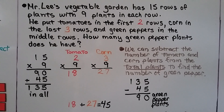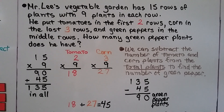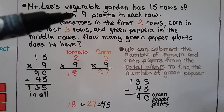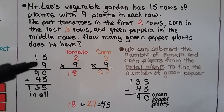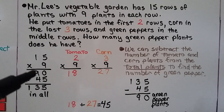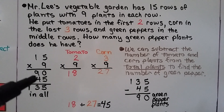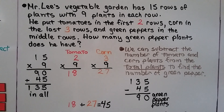Mr. Lee's vegetable garden has fifteen rows of plants with nine plants in each row. He put tomatoes in the first two rows, corn in the last three rows, and green peppers in the middle rows. How many green pepper plants does he have? First we figure out how many plants there are in all: fifteen rows with nine in each row. Using partial products: nine times one ten is ninety, nine times five is forty-five. Ninety plus forty-five — he has one hundred thirty-five plants in all.